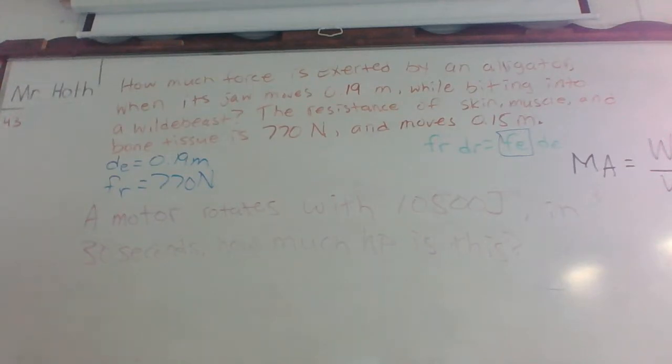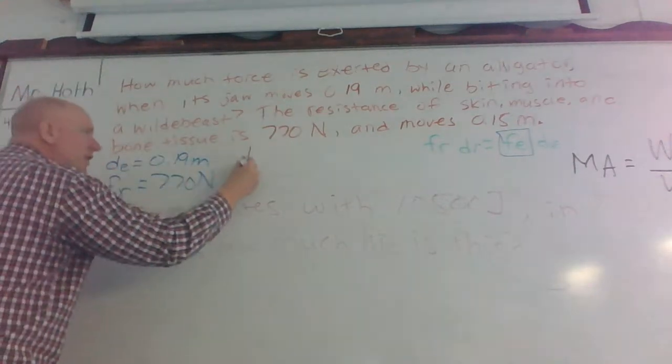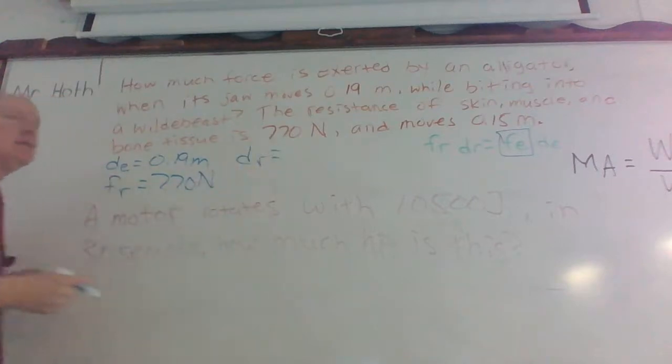And then moves 0.15 meters once it meets that resistance. Because remember, this doesn't, when its jaw is moving, it's not meeting any resistance. But once it clamps down on that animal, that's where it meets its resistance from. Skin, hair, muscle, bone, any one of those. Okay. So or you could say, by default, if we know what our effort distance is, well then this must be your resistance distance. And it is.